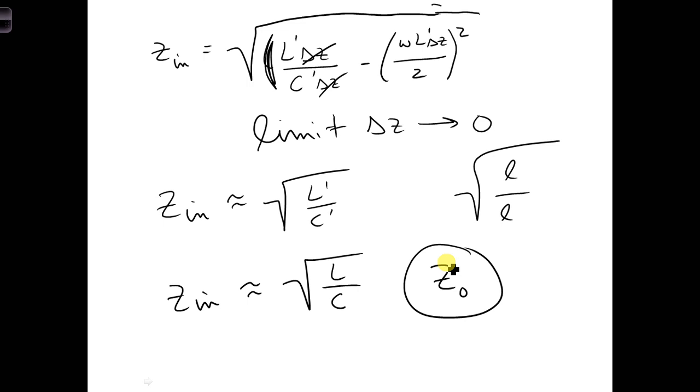Now let's think about what we can learn from this square root of l over c value for z naught, the characteristic impedance. For example, l and c are both real numbers. So z naught is a real number. What other circuit component has a purely real impedance?